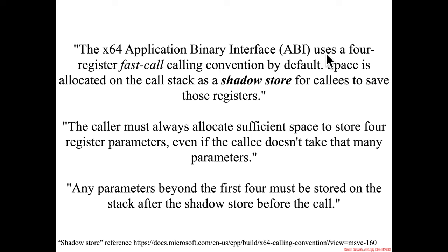So it's passing four parameters in four registers, but it's also allocating space for the callee to save those registers back to the shadow store if it wants. The caller must always allocate sufficient space to store these four register parameters even if the callee doesn't take that many parameters.